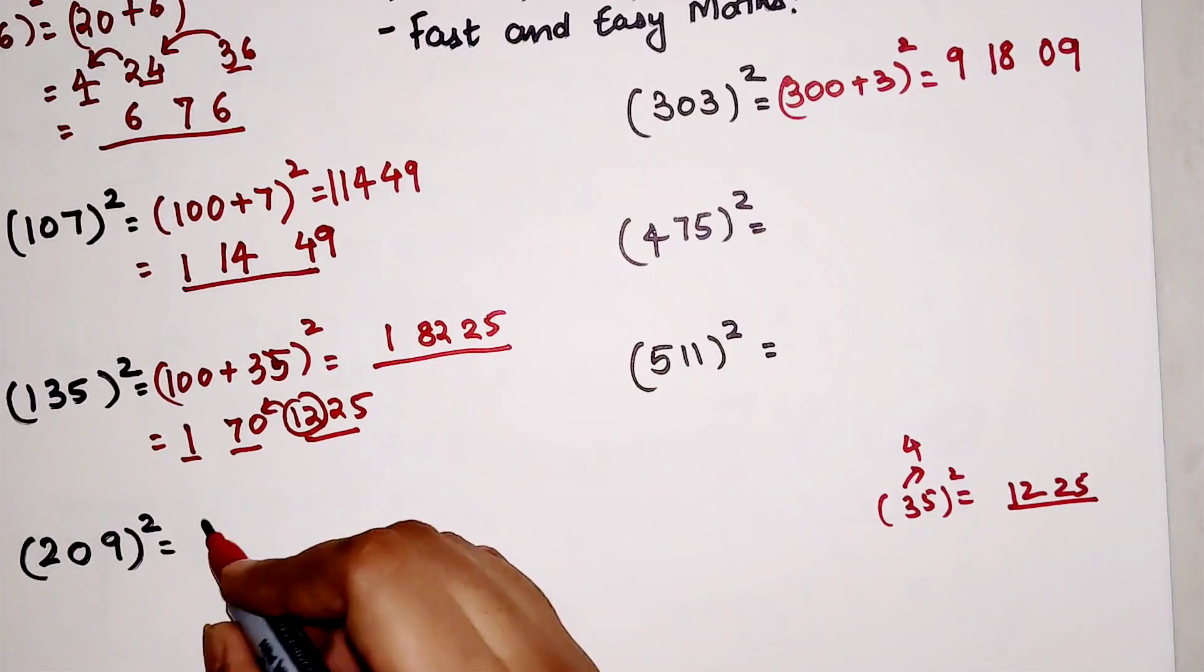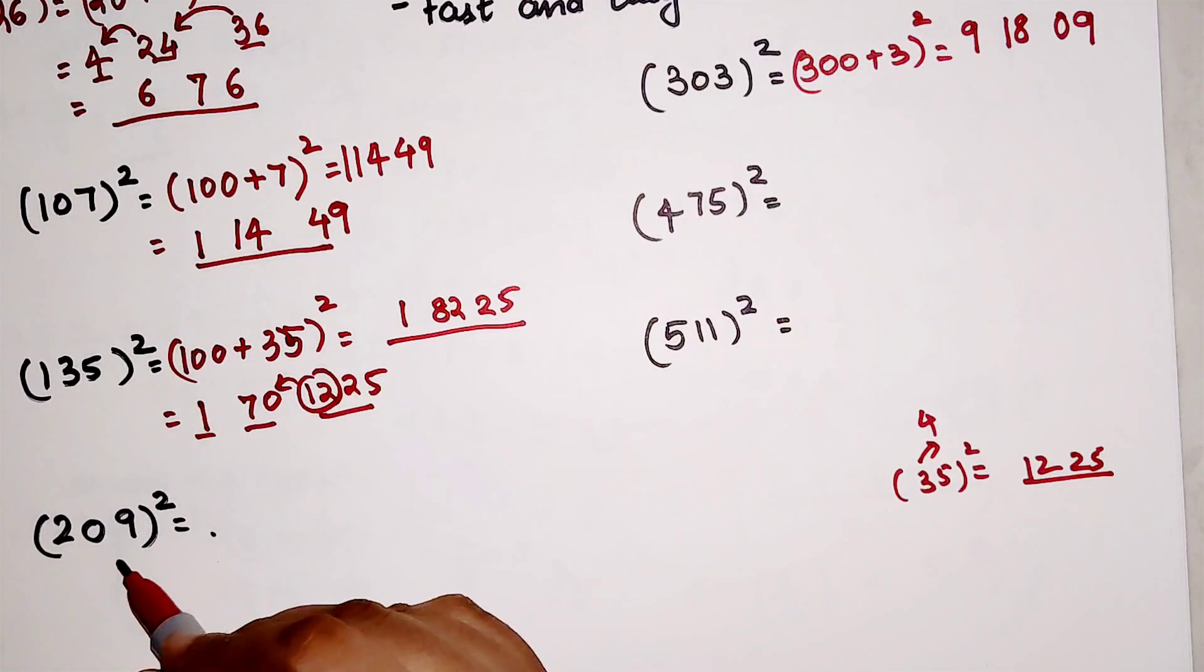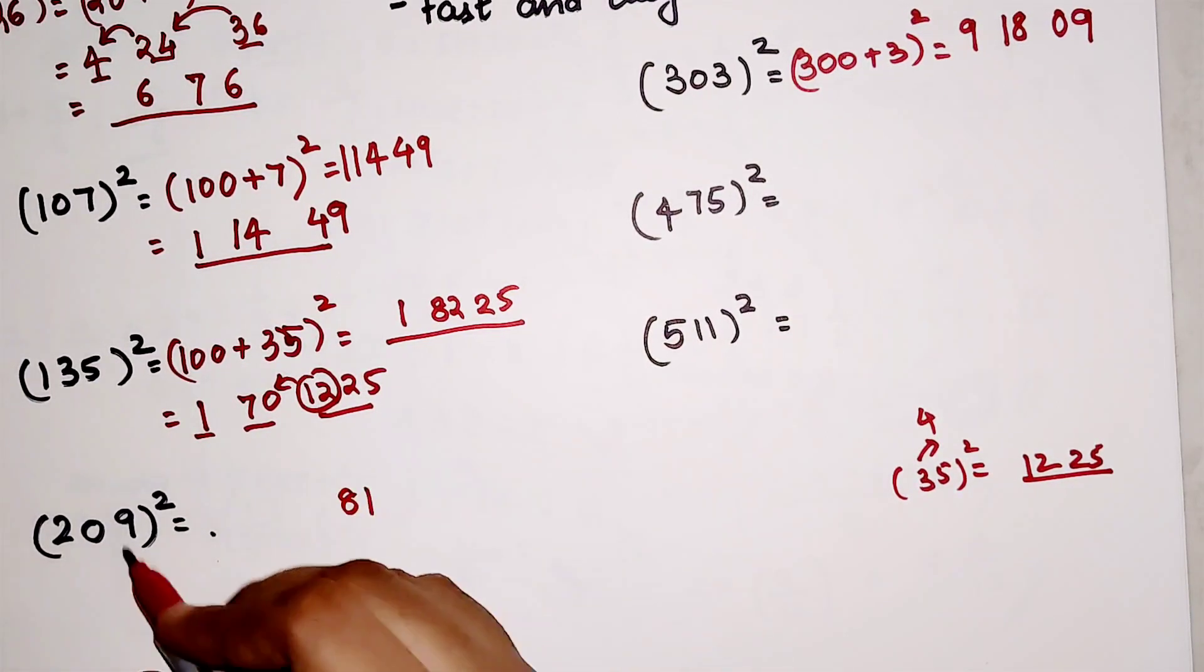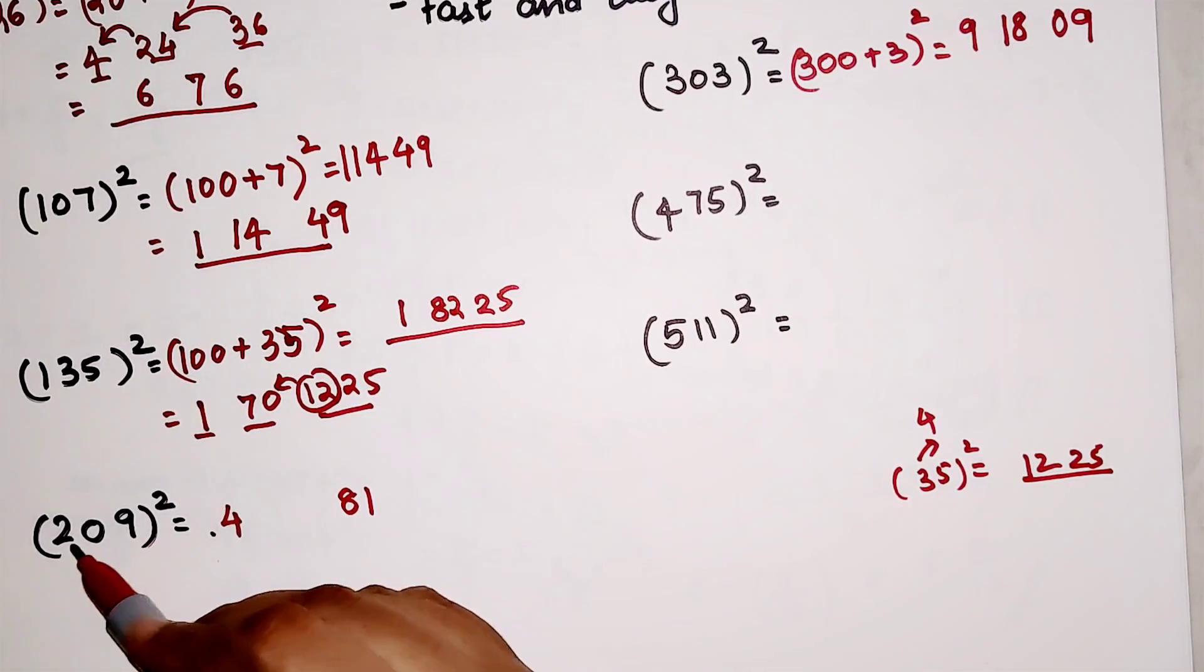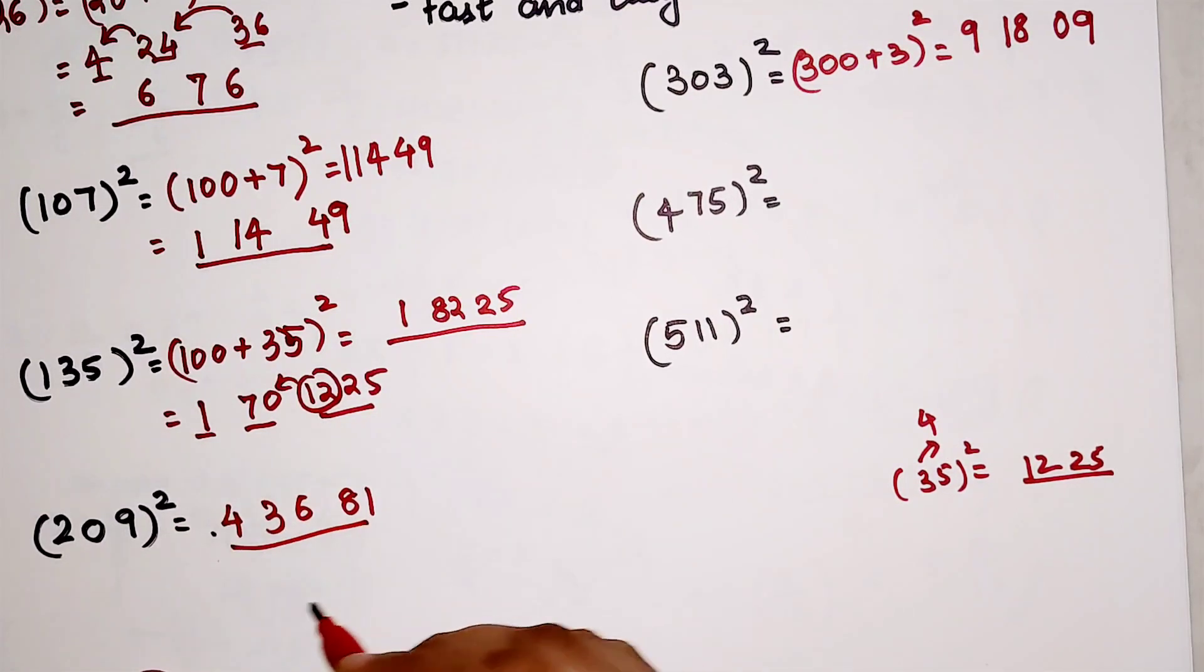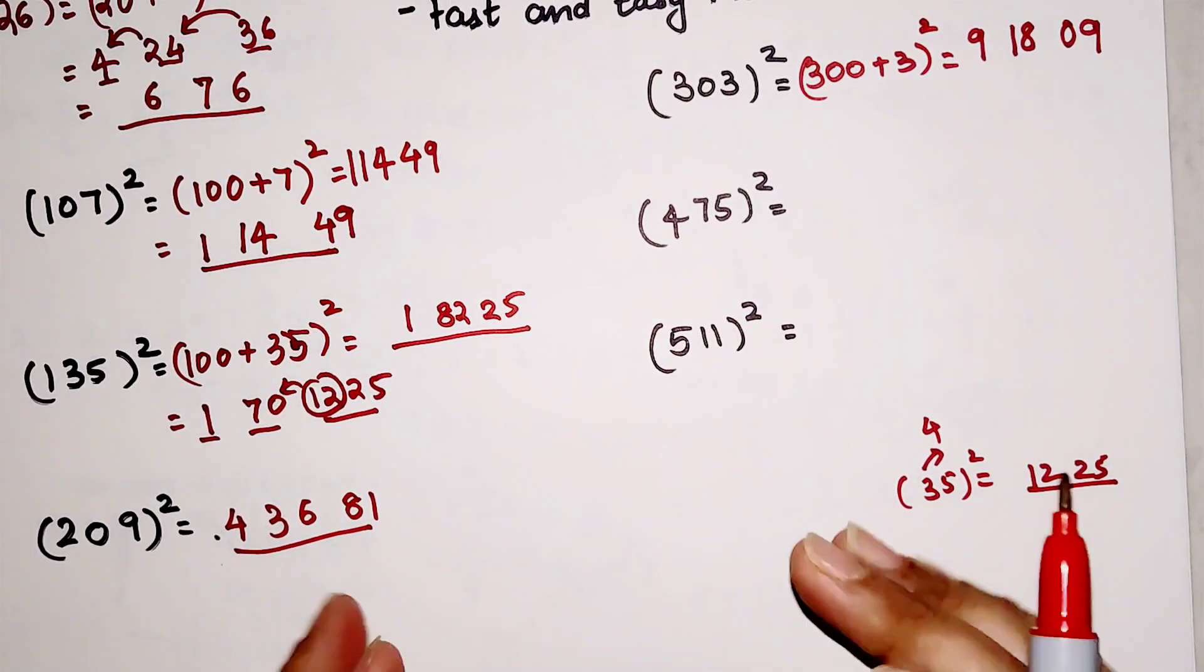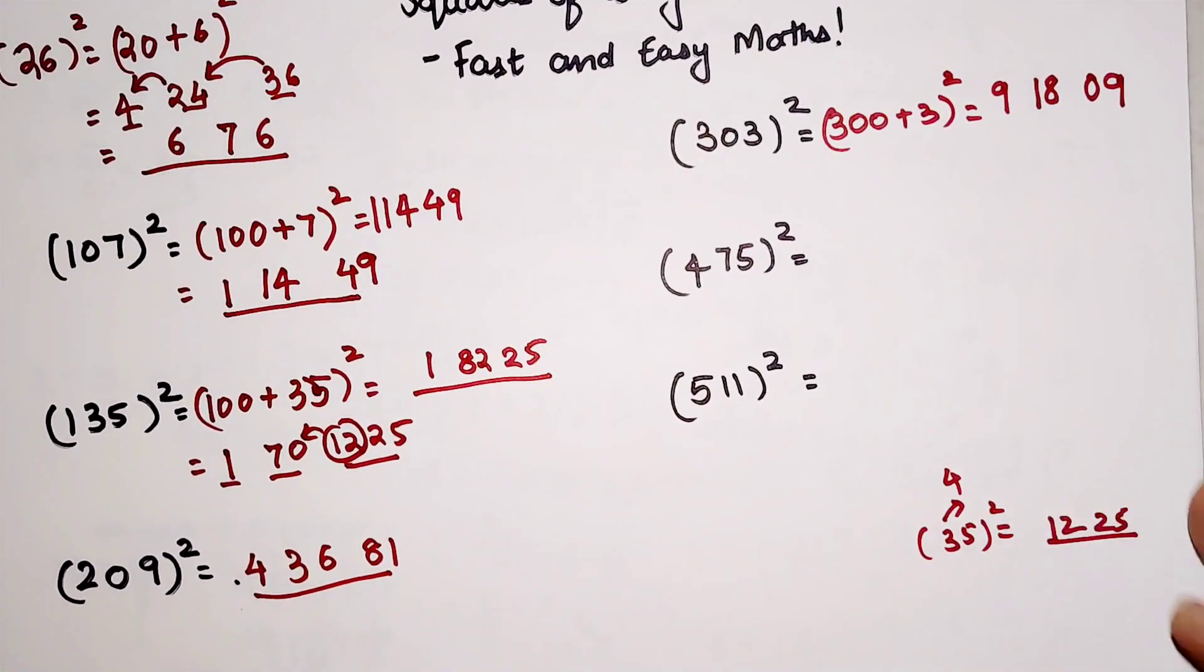Now let's look at 209². Let's not write this as 200 plus 9 and all that, we will just write it directly. So square of 9 is 81. Then square of 2 is 4. 9 into 2 is 18, 18 into 2 is 36. So your answer is 43,681. See, now you can literally do this in your mind as well. I really hope you all are getting this particular trick.